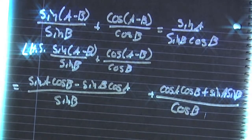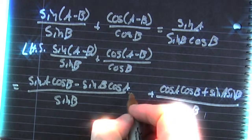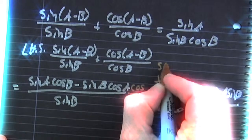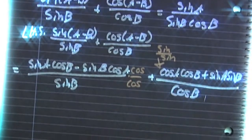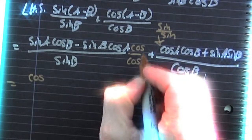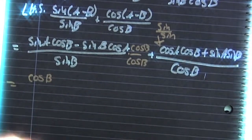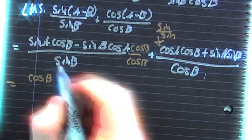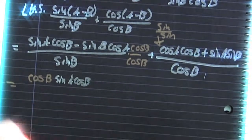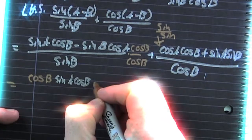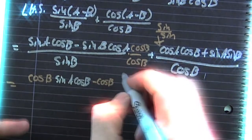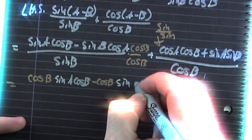Now, what do we want to do? Add those fractions. So we're going to have to multiply each one of those by one — cosine over cosine and sine over sine, respectively. So now we do that. When we take that cosine times that binomial in that numerator on the left-hand side, it's going to distribute in, and you will have the cosine B times that first term minus the cosine B times that second term.